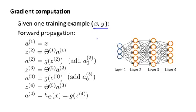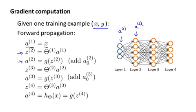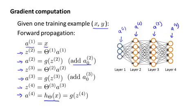The first thing we do is apply forward propagation in order to compute what our hypothesis actually outputs given this input x. Recall that a1 is the activation values of the first layer, that is the input layer. So we're going to set that to x. Then we're going to compute z2 equals theta1 times a1, and a2 equals g, the sigma activation function applied to z2. This gives us our activations for the first hidden layer, that is layer two of the network. We also add those bias terms. Next, we apply two more steps of forward propagation to compute a3 and a4, which is also the output of our hypothesis h of x. This is our vectorized implementation of forward propagation and it allows us to compute the activation values for all of the neurons in our neural network.